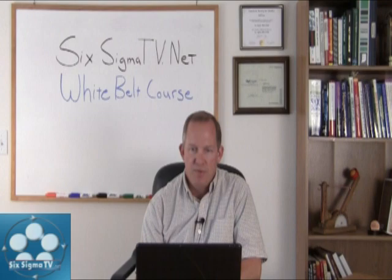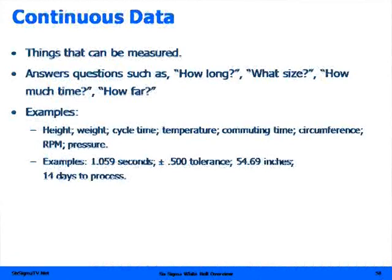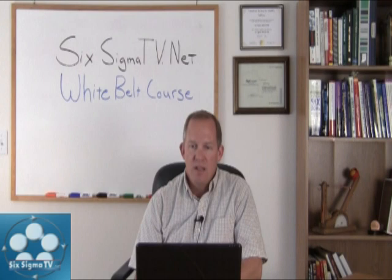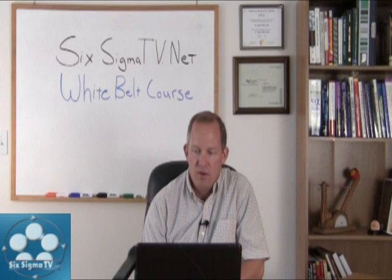Continuous data are the things that can be measured. The easiest way to understand continuous data is: can I take this thing that I'm trying to measure and cut it in half, and does that make sense? If we had a defect, I can't cut it in half and say we only have half a defect — we either have a defect or we don't. Whereas if we have a minute, I can cut that in half and say it took a minute and a half, or it weighed a pound and a half. Anything you can cut in half or that uses some type of measuring device is considered to be continuous data.